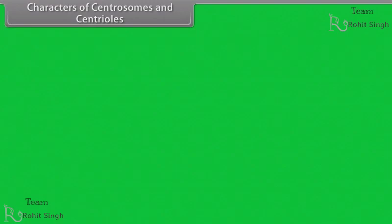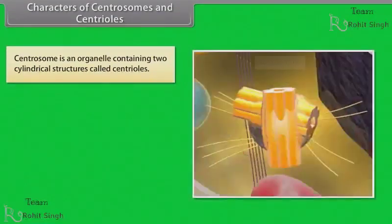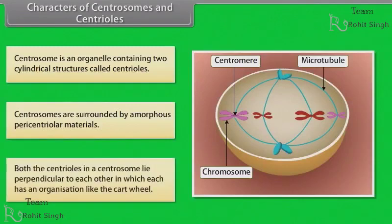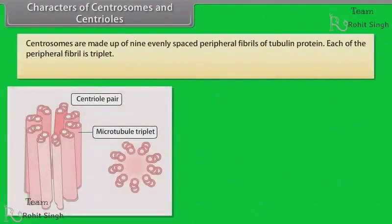Characters of centrosomes and centrioles. Centrosome is an organelle containing two cylindrical structures called centrioles. Centrosomes are surrounded by amorphous pericentriolar materials. Both centrioles in a centrosome lie perpendicular to each other, and each has an organization like the cartwheel. Centrioles are made up of 9 evenly spaced peripheral fibrils of tubulin protein, and each of the peripheral fibrils is a triplet.